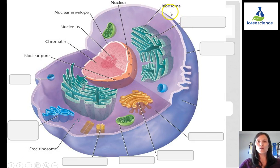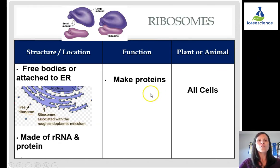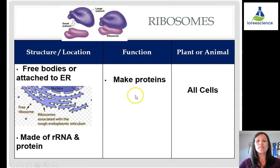Ribosomes can be found attached to the endoplasmic reticulum or free-floating in the cytoplasm. Their function is to make proteins. They can be free bodies or attached to the ER, and they are made up of rRNA (ribosomal RNA) and proteins. Ribosomes are found in all types of cells.